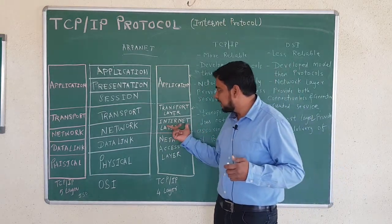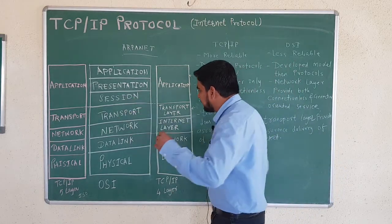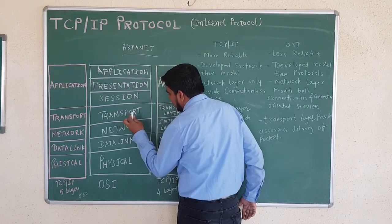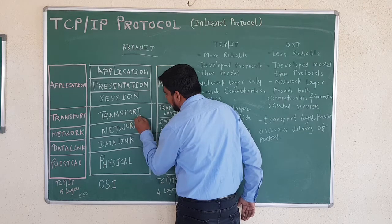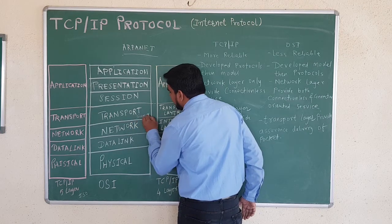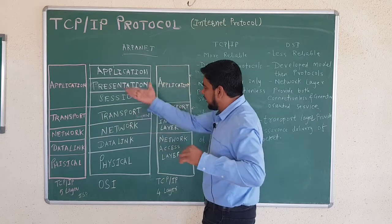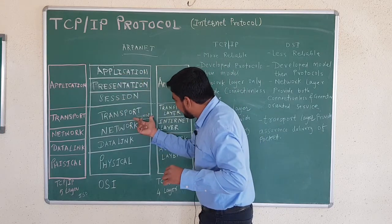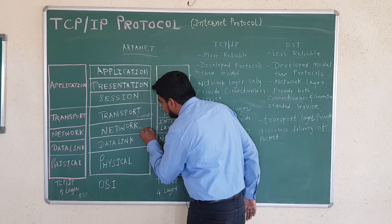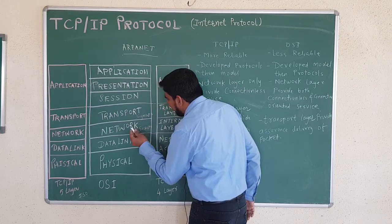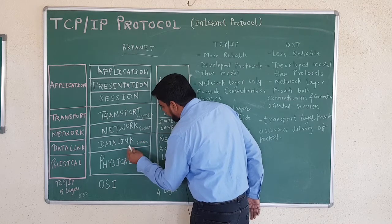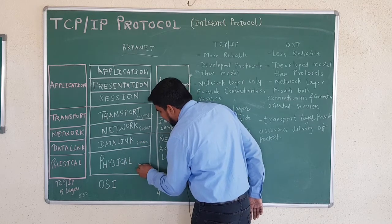The internet layer handles IP addressing and packet routing. The transport layer works with segments. Data is divided into segments, segments are divided into packets, and those packets are then converted into frames.